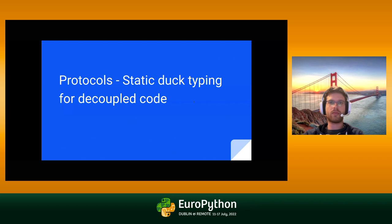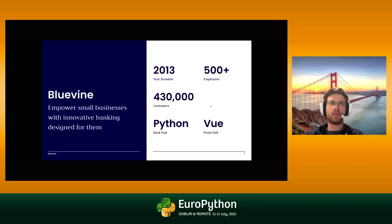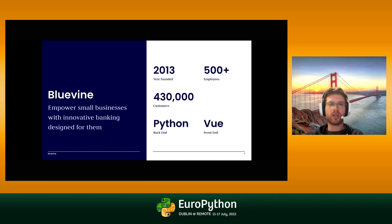A little bit about me. My name is Ron. I'm a data engineer at Bluevine. I enjoy learning about how programming languages work, new features and how I can use them better. I love traveling and hiking. I'm currently based out of California. Bluevine is a fintech company that provides online business banking and financing to small to medium sized businesses. We use Python everywhere — Django on the server side — and use it for our data pipelines, data science, analytics and machine learning.